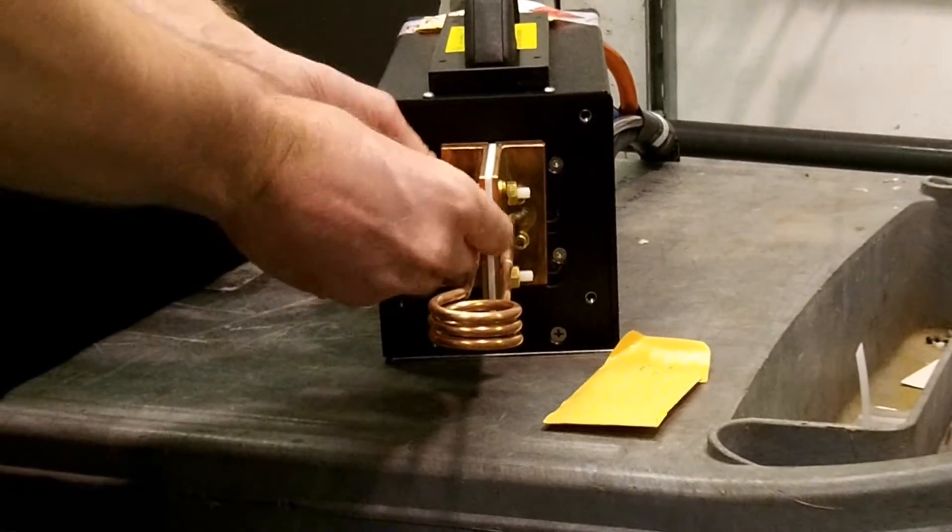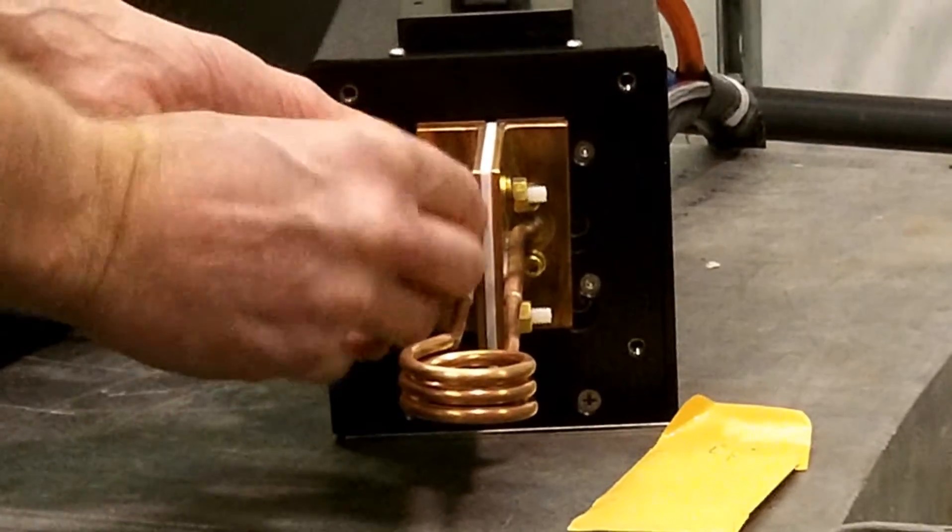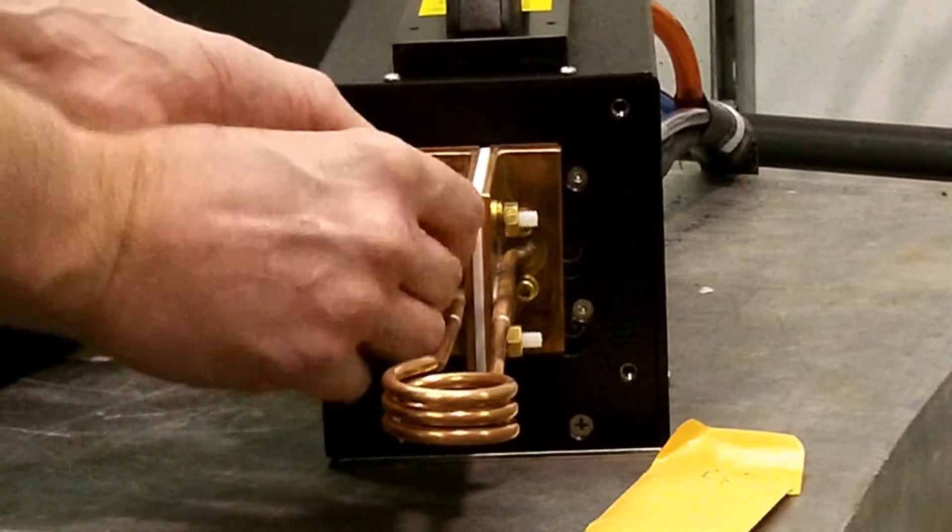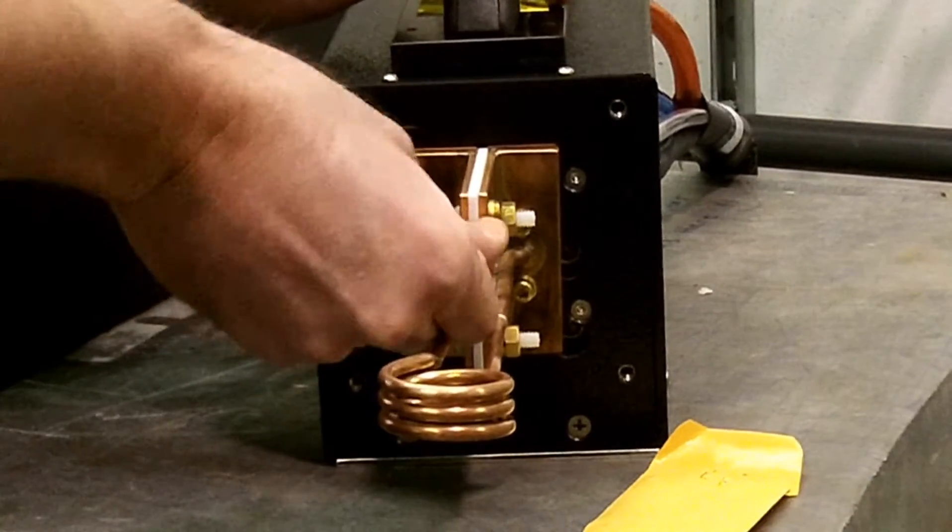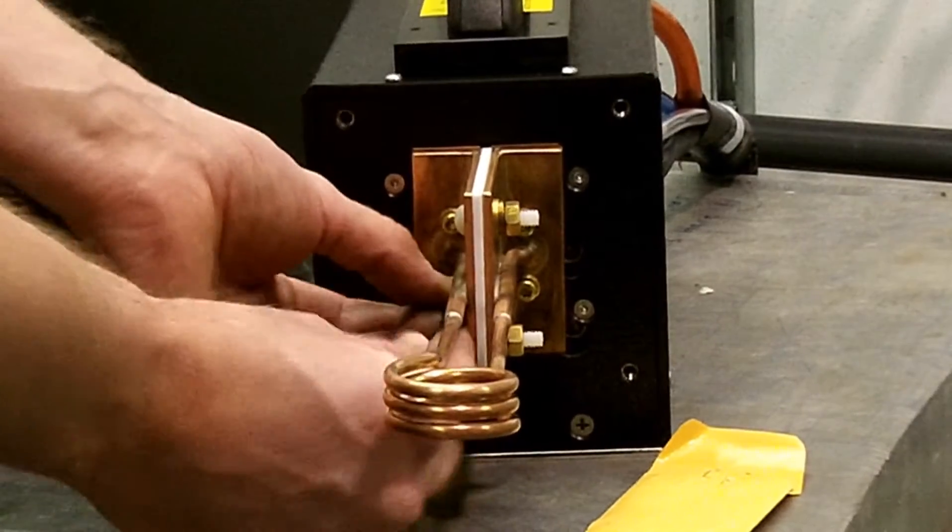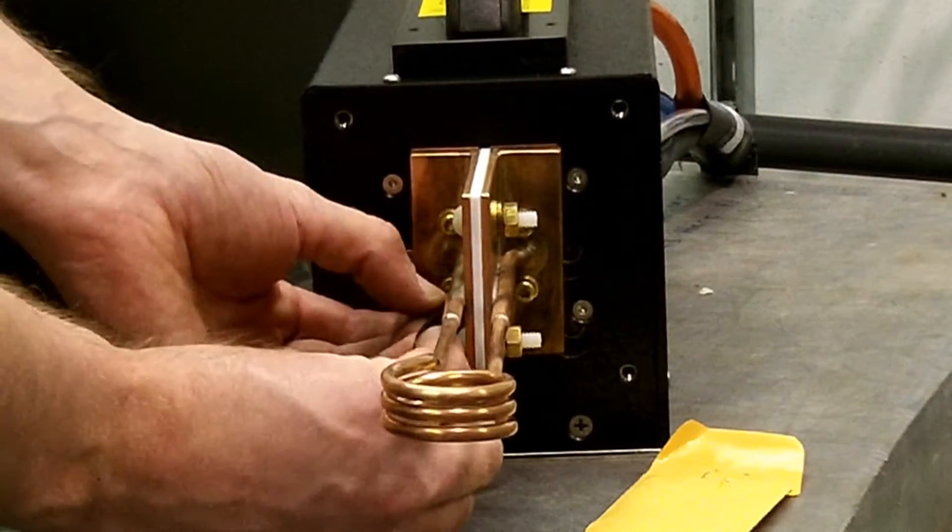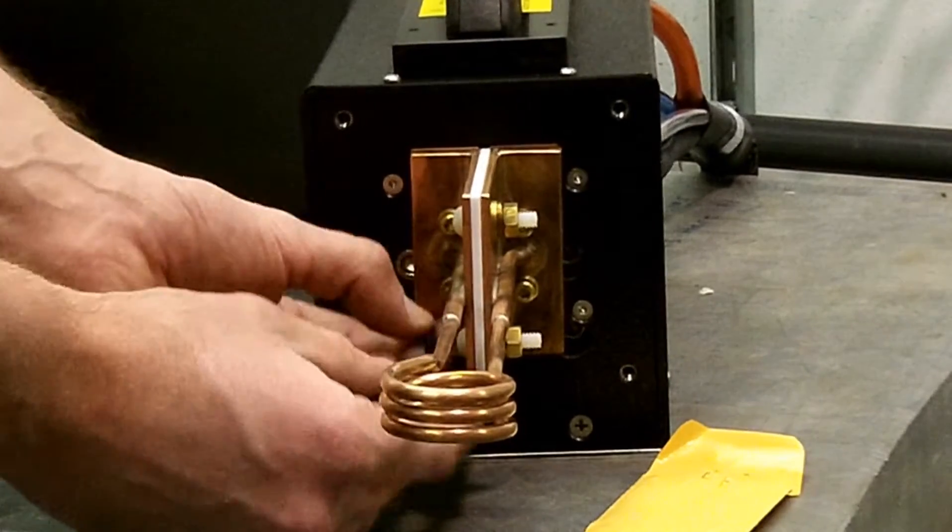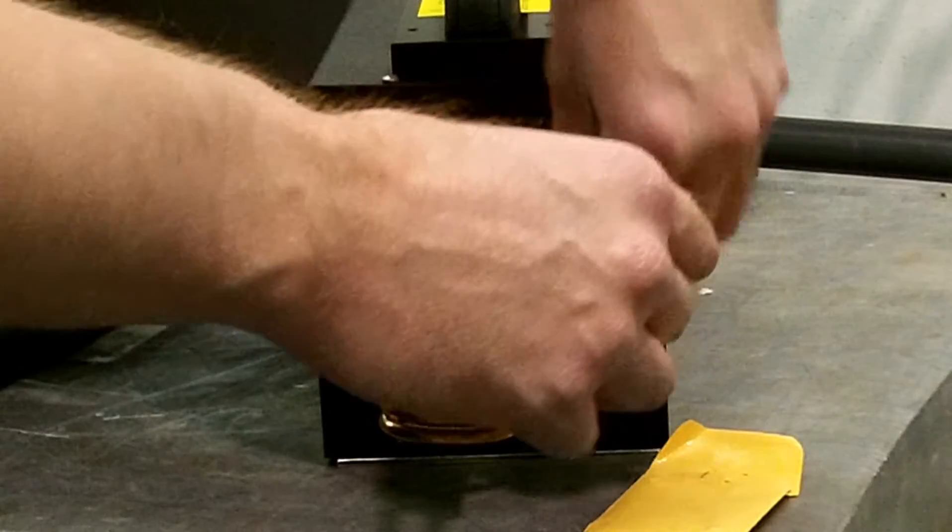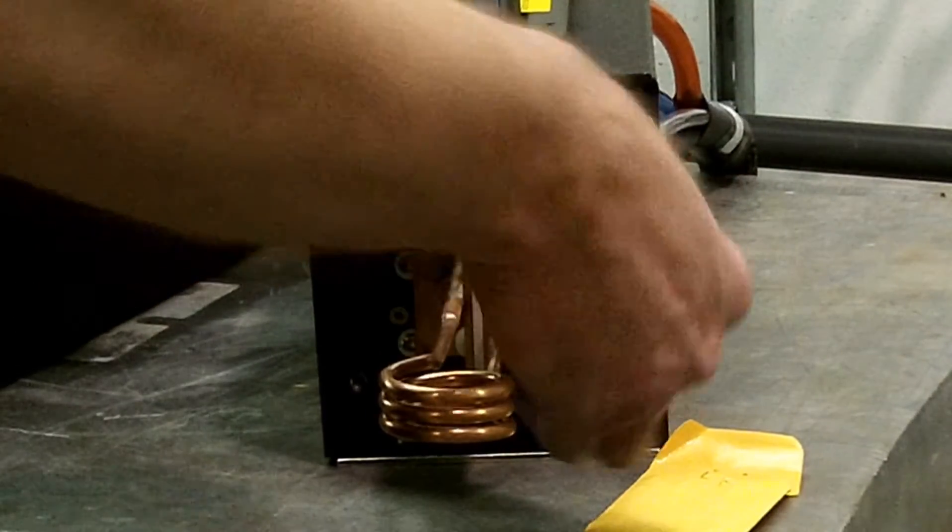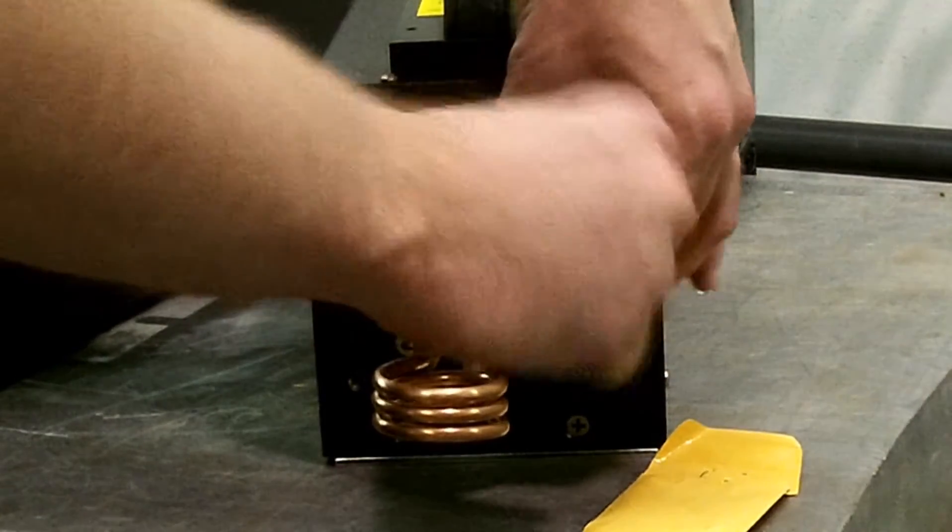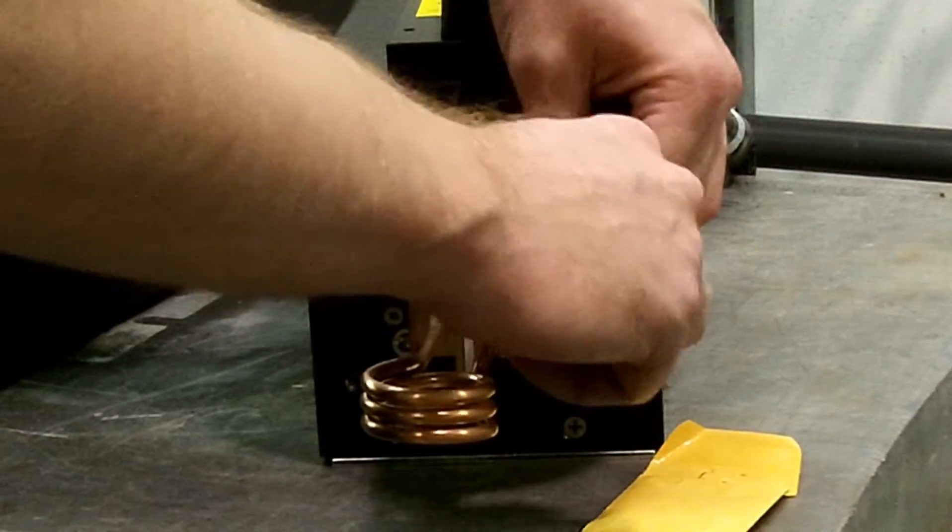Now, use the provided wrench to tighten the M5 .8 by 16mm brass screws. Once you tighten them, you can finger tighten them and then use the wrenches once again to ensure there will be no water leaks. With that, you have concluded connecting the test coil to your EasyHeat Li.